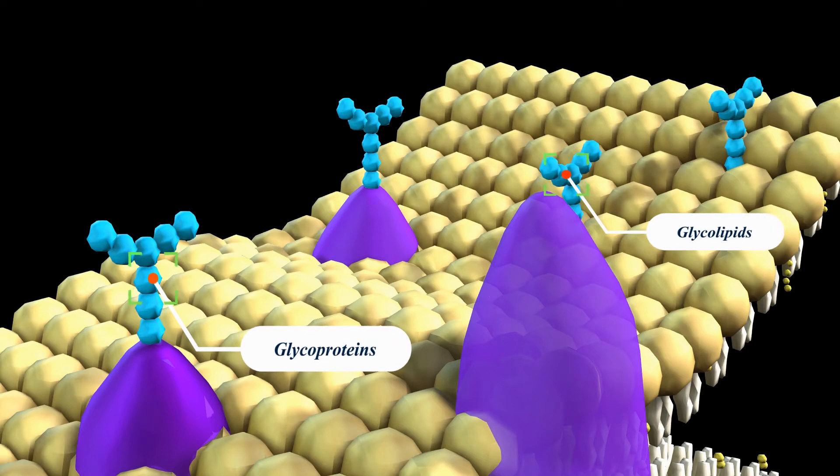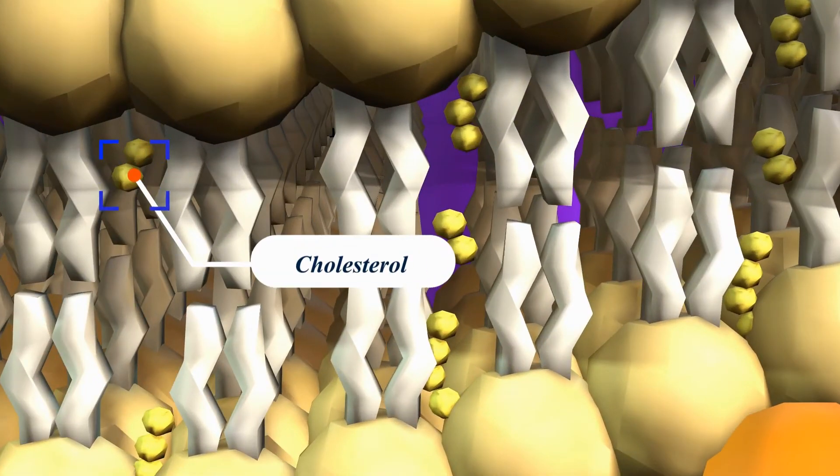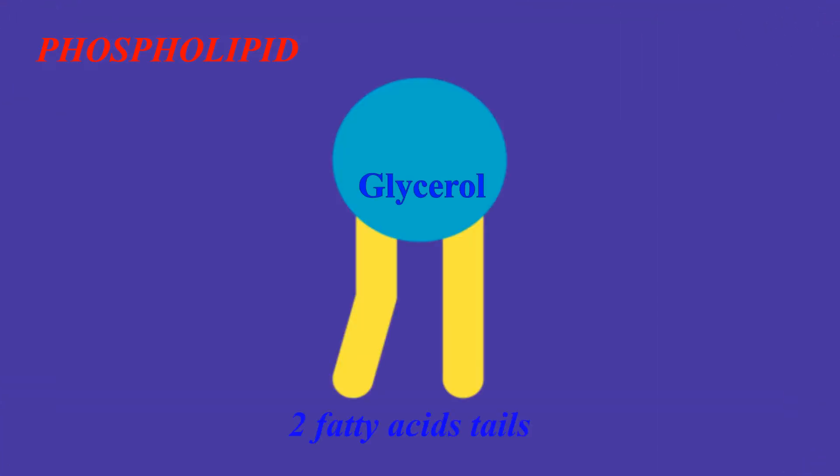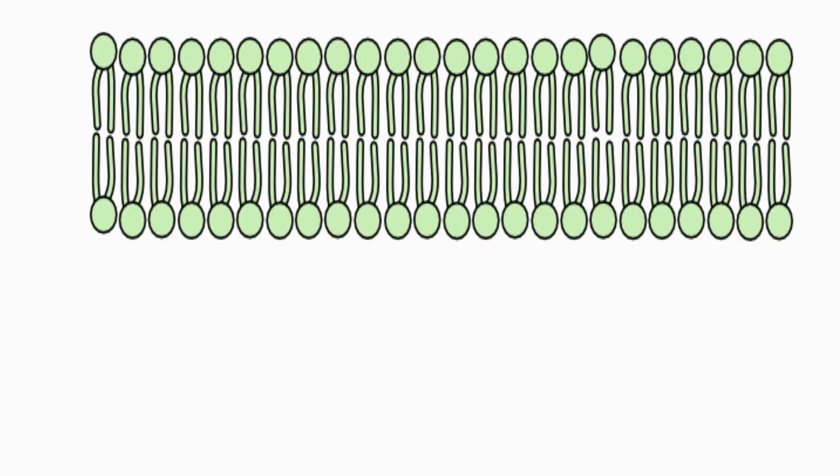A phospholipid is a lipid made of glycerol, two fatty acid tails, and a phosphate-linked head group. Biological membranes usually involve two layers of phospholipids with their tails pointing inward, an arrangement called a phospholipid bilayer.